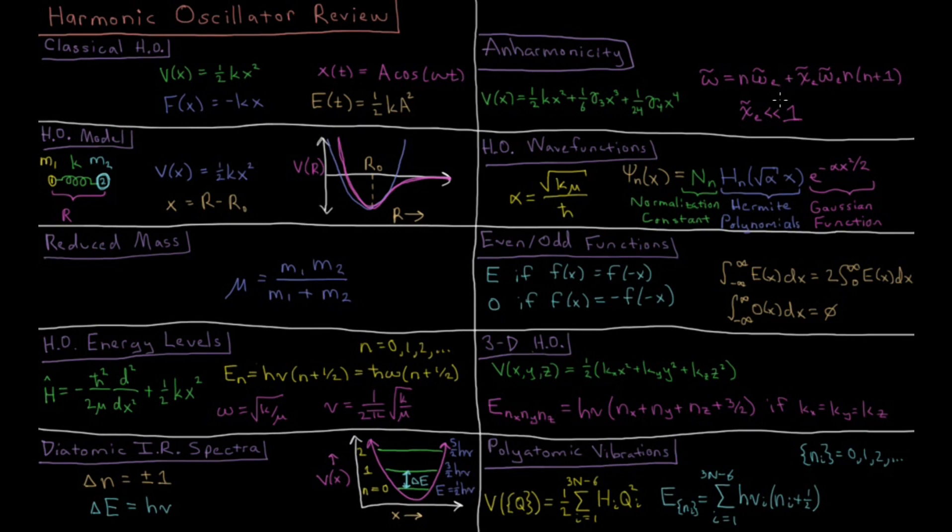The result of this is that we have this anharmonicity constant, which is hopefully much less than one. For a perfectly harmonic oscillator it's zero. It tends to push these energy levels a little bit closer together and make these changes in energy smaller as you go higher and higher up.